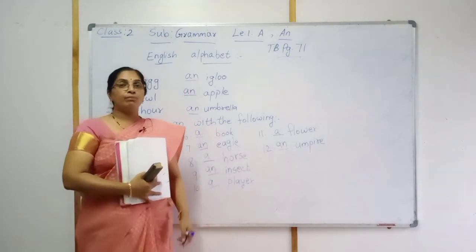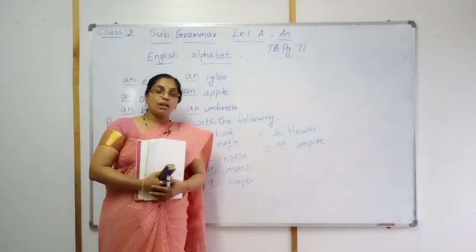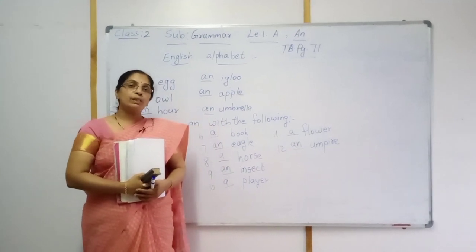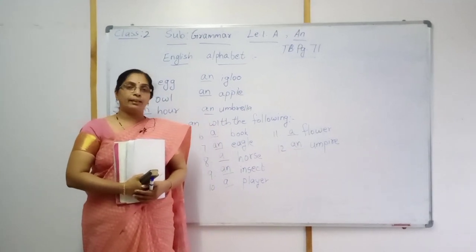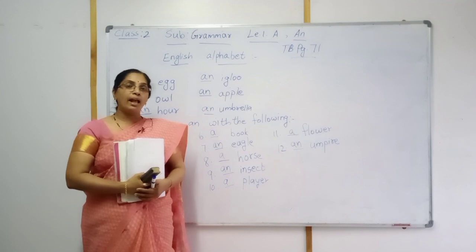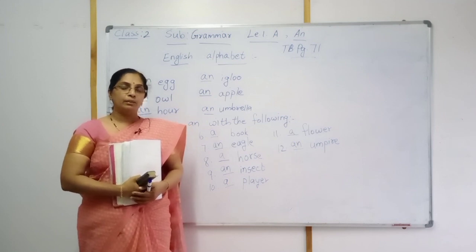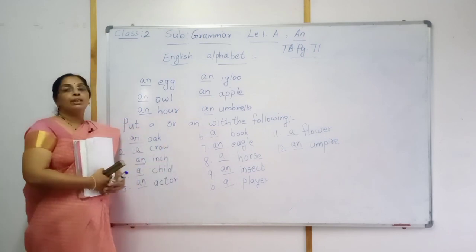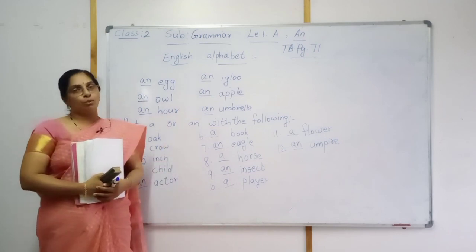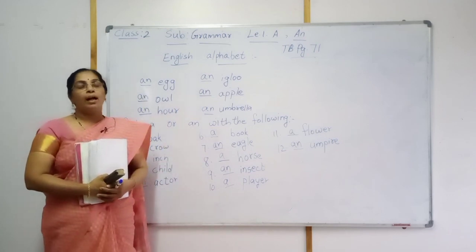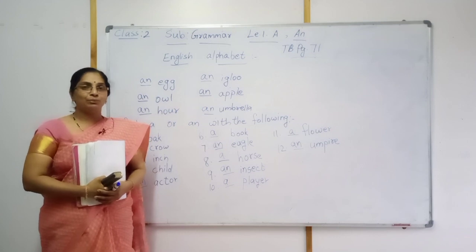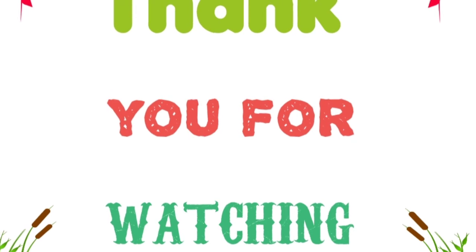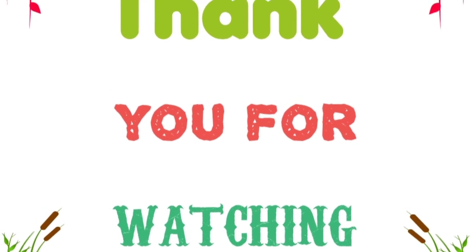Understood, children? When there is a vowel sound, we will use AN. Consonant sound, we will use A. A and AN — understood? Write these exercises in your classroom book and homework book also, children, and learn well. Thank you. Bye!